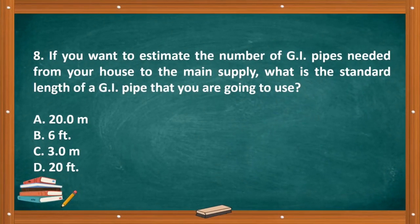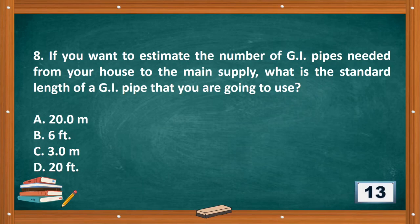Question number eight: If you want to estimate the number of GI pipes needed from your house to the main supply, what is the standard length of a GI pipe that you are going to use? A. 20.0 m, B. 6 feet, C. 3.0 m, D. 20 feet. The correct answer is letter B, 6 feet.